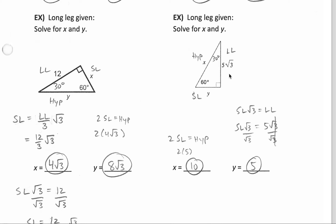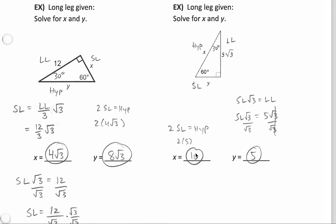One more time, this time including the length with a radical value. If we divide the long leg by the square root of 3, we get the short leg. It's nice if your long leg has radical 3 attached, because all you need to do is cover that up and your short leg value is right in front of it. Dividing this by the square root of 3 cancels the square root of 3, and we're left with a length of 5. If the short leg is 5, we can double that to get the hypotenuse: 2 times 5 is 10.